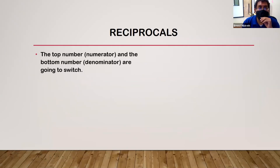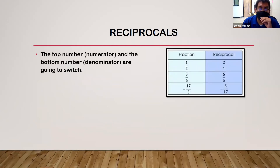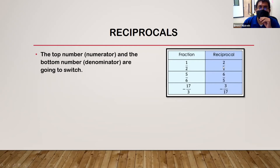Reciprocals: the numerator and denominator are switched to give you a reciprocal. For example, the reciprocal of one-half has the numerator and denominator switch — one goes to the bottom and two goes to the top. Other examples: the reciprocal of five-sixths is six-fifths, and the reciprocal of negative 17 over 3 would be 3 over 17.